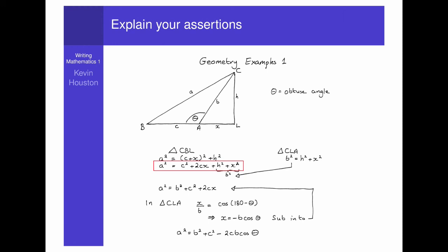However, in this case, the line is not deduced from the diagram, but from the first equation by expanding the bracket. So, we should say so. Expanding the brackets, we get a squared equals c squared plus 2cx plus h squared plus x squared.